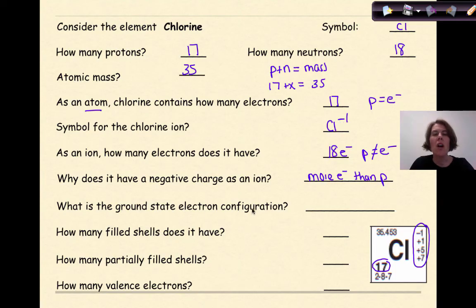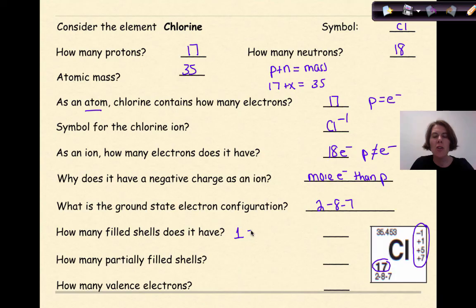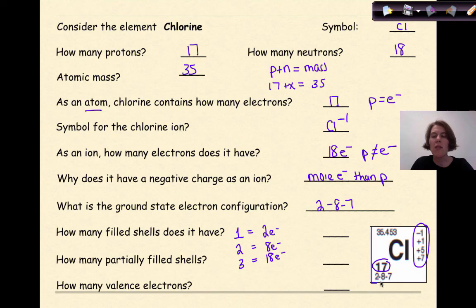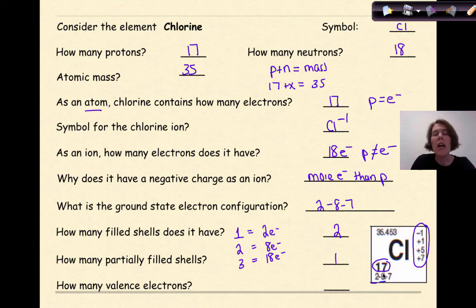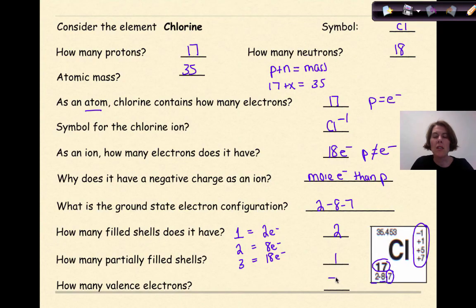What is the ground state electron configuration of chlorine? Based on our periodic table, it is 2, 8, 7. How many filled shells does it have? In the first shell, you can have a maximum of 2 electrons; in the second shell, a maximum of 8; in the third shell, a maximum of 18. The first shell and the second shell are filled, but not the third shell. So chlorine has two filled shells and one partially filled shell, because the third shell only goes to 7 electrons when it could theoretically go up to 18. Chlorine has 7 valence electrons, found by looking at the last number in the electron configuration.